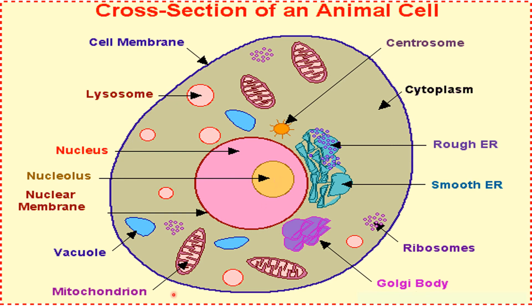A small spherical substance present inside the nucleus called the nucleolus plays an important role in protein synthesis. The mitochondria is also known as the powerhouse of the cell. It helps to oxidize the food in our body to produce energy.